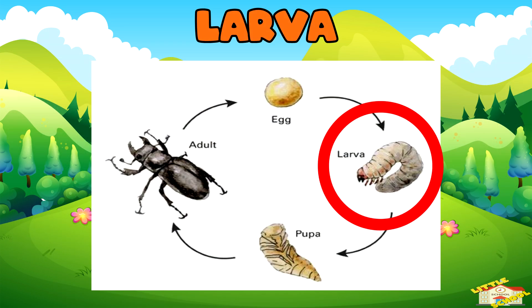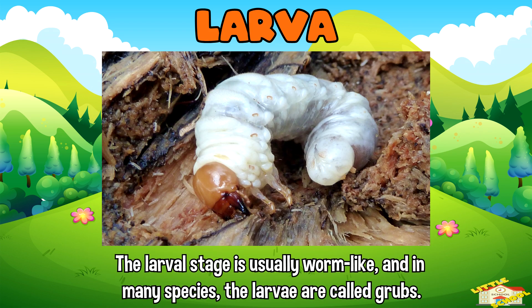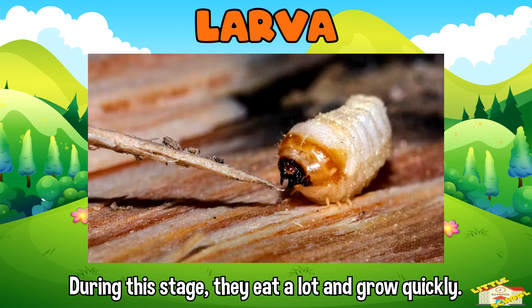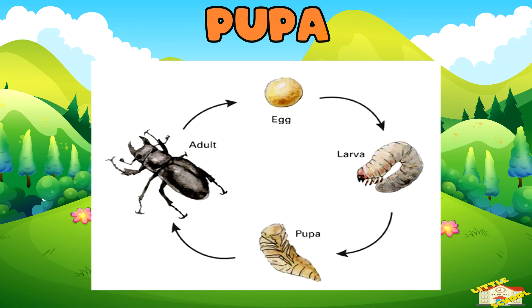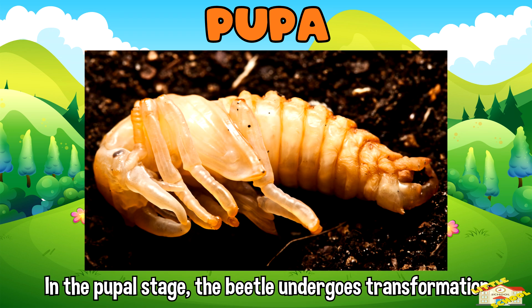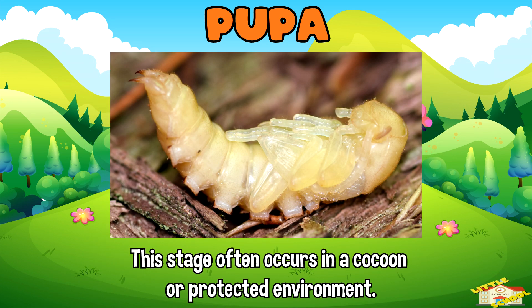Larva: the larval stage is usually worm-like, and in many species the larvae are called grubs. During this stage they eat a lot and grow quickly. Pupa: in the pupal stage the beetle undergoes transformation. This stage often occurs in a cocoon or protected environment.